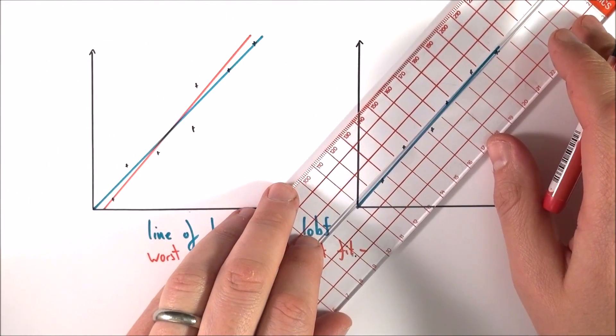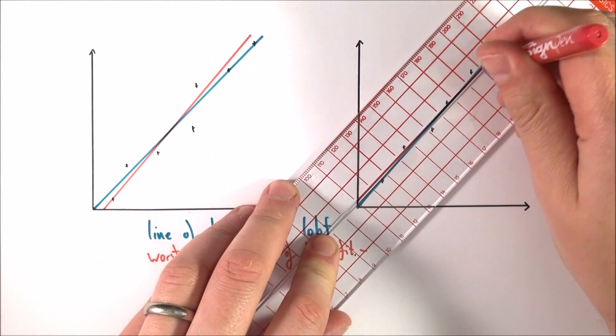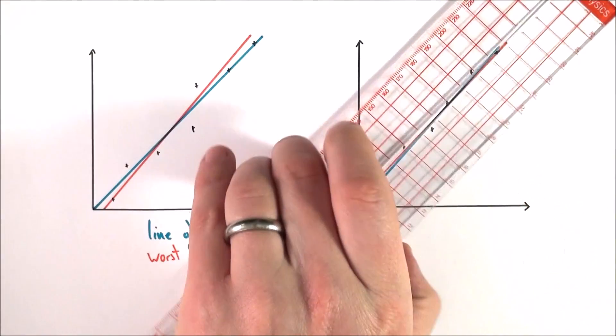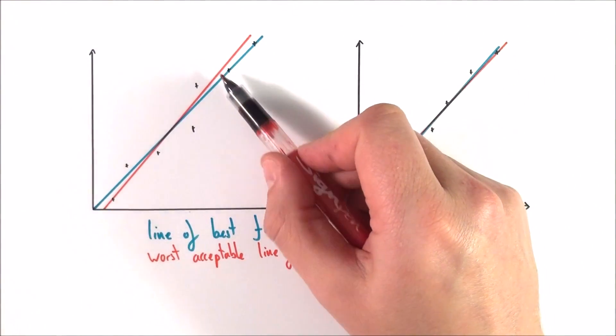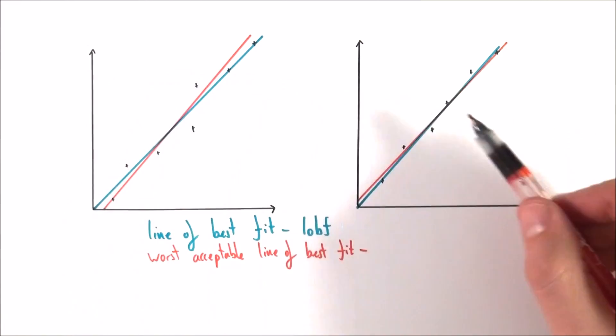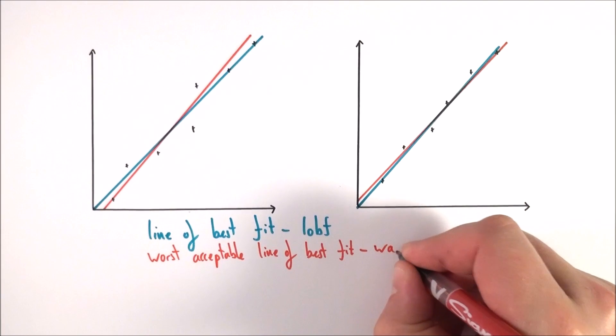This one here, if I put in my worst acceptable line of best fit, there's much less possibility. So maybe this one here has a line that looks maybe a bit like that. And what you can now see is that these two, the gradients of these two lines are much more different than the gradients of these two lines.